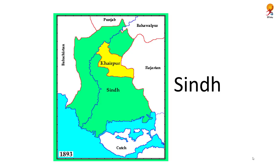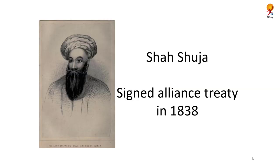Sindh was acquired through a subsidiary alliance by showcasing a British solution to the Afghan threat. Sindh accepted the alliance in 1839 after the tripartite treaty of 1838 between the British, Ranjit Singh of Punjab, and Emperor Shah Shuja of Sindh.